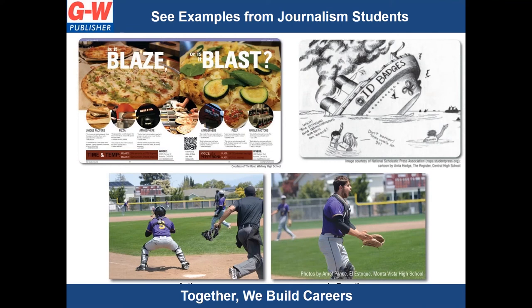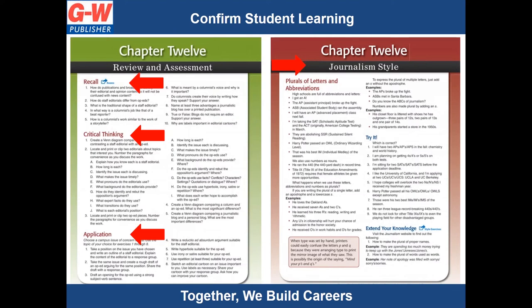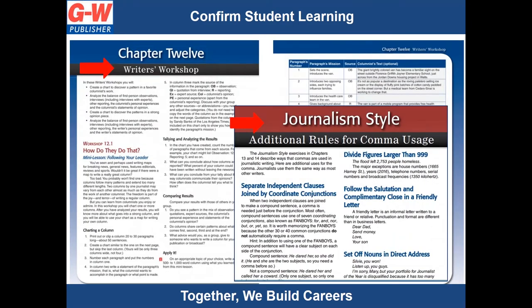We have over 100 student examples of writing, design, and photography in the textbook from real-life high school publishing situations. End-of-chapter features include recall, critical thinking, and application questions to encourage real-world learning. Journalism style activities teach students the skills they need to create written copy in accepted journalism style. Every chapter also includes writer's workshops, which lead students through a process that emphasizes writing for an audience, develops students' writing ability, and trains them for future editorial leadership.